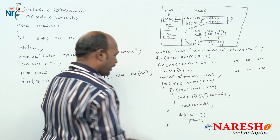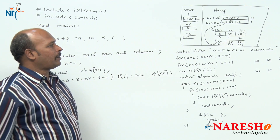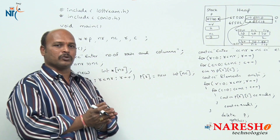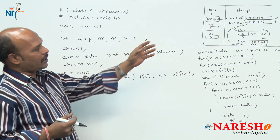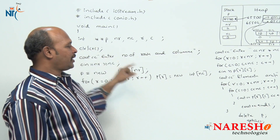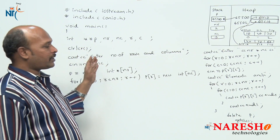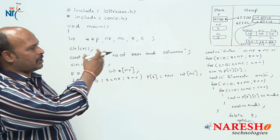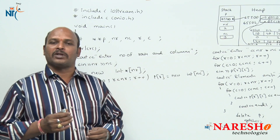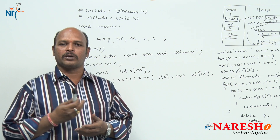That is how memory is allocated for a dynamic two-dimensional array. The key points are: first, use a double pointer; second, create an array of pointers. Only by combining both double pointers and the array concept can we implement a dynamic two-dimensional array. Thank you for watching — in the next session we will continue with the remaining topics.